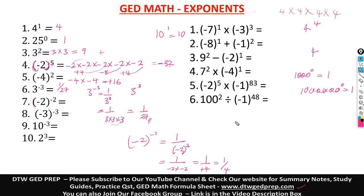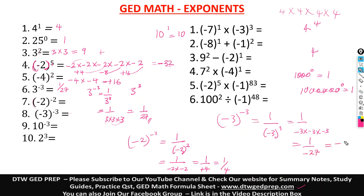Now negative 3 in parentheses raised to the power of negative 3: that becomes 1 over, in parentheses, negative 3 raised to the power of 3. That gives 1 over negative 3 times negative 3 times negative 3, which is 1 over negative 27 — the same as negative 1 over 27. Also, 10 raised to the power of negative 3 gives 1 over 10 cubed, which is 1 over 1,000.